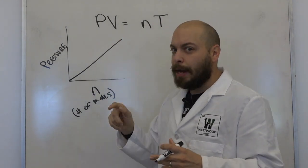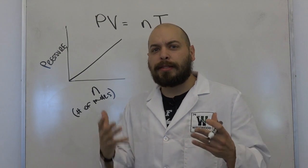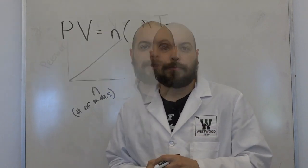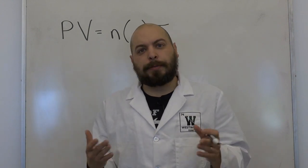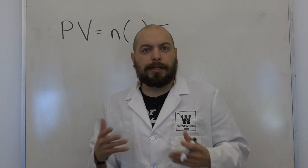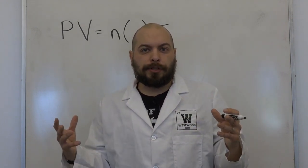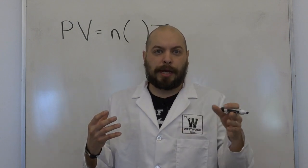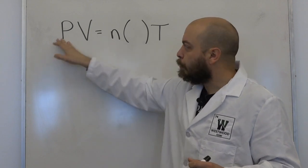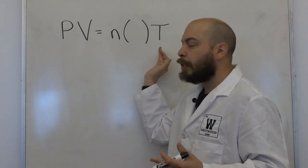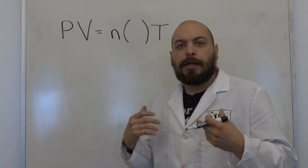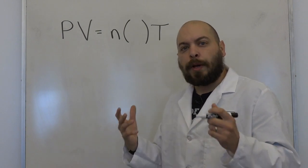But here's the thing: PV does not equal nT. If you do this math, the values aren't equal to each other — something is missing. That missing piece is what we refer to as the gas constant. The gas constant, as the name suggests, is a constant value that relates the actual relationships between pressure, volume, number of moles, and temperature. In order to come up with a mathematical, quantitative way of doing calculations, the gas constant was developed, and it's represented by the capital letter R.